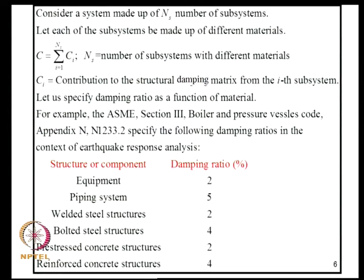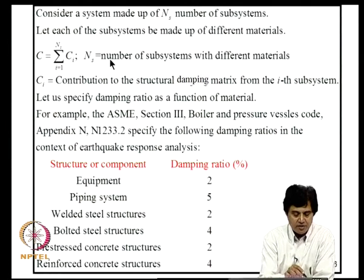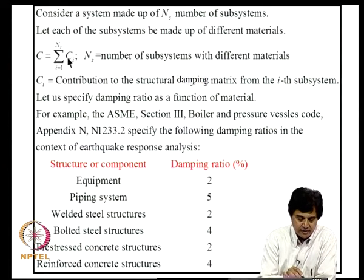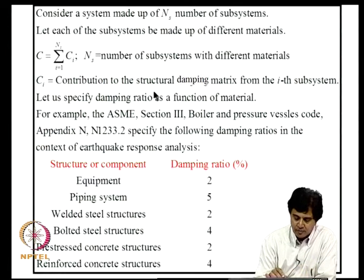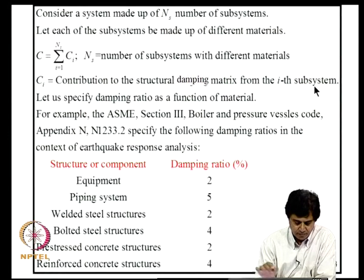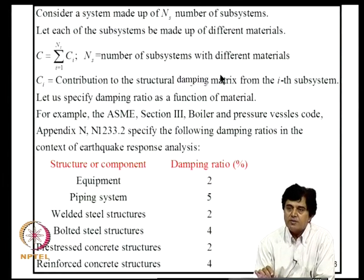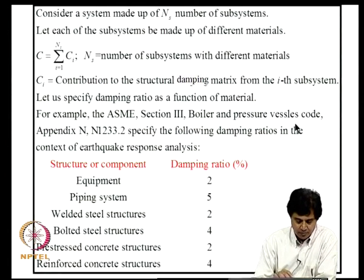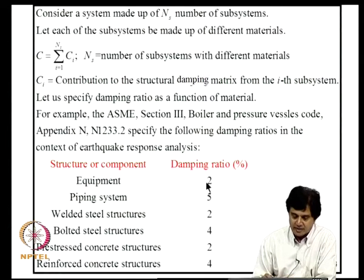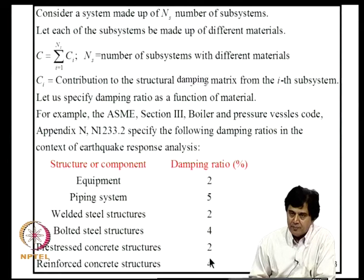We consider a system made up of NS subsystems, each made up of different materials, so the damping matrix can be envisaged as being made up of NS contributions from each subsystem. CI is the contribution from the ith subsystem. We specify damping ratio as a function of material — for example, the ASME Section 3 boiler and pressure vessel code specifies: equipment 2%, piping 5%, welded steel structure 2%, and so on. This is an alternative way of specifying damping.